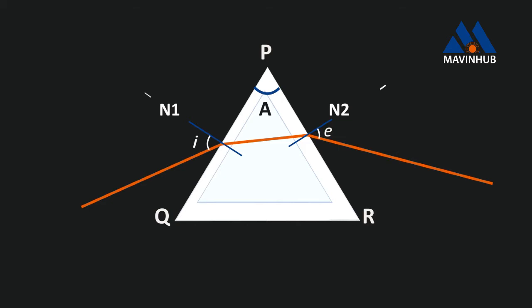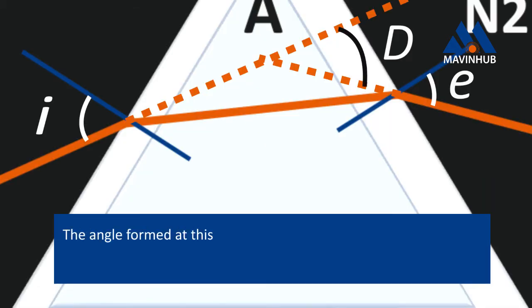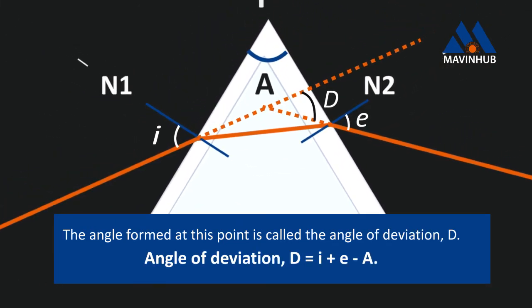Let's extend the incident ray out. Also, let's extend the emergent ray in. The angle formed at this point is called the angle of deviation. Angle of deviation D equals I plus E minus A.